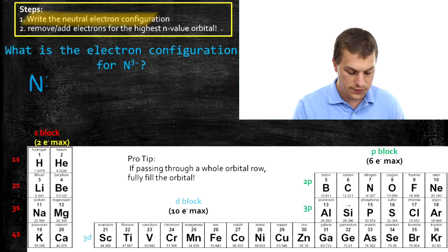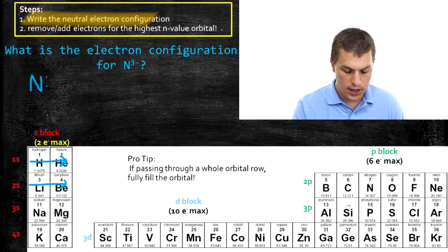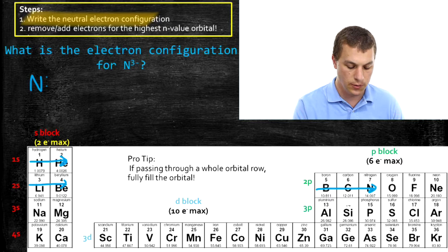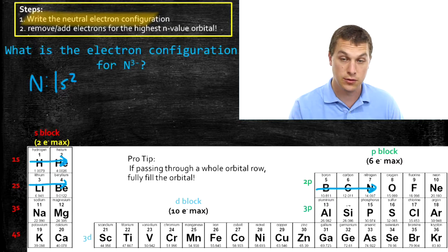So writing the electron configuration for nitrogen involves going through the 1s row, the 2s row, and then into the 2p row all the way to nitrogen. So that's three boxes into the 2p row. And that means we get 1s2 from those two boxes in the 1s,